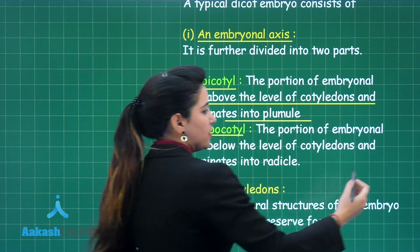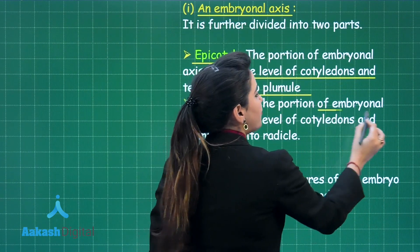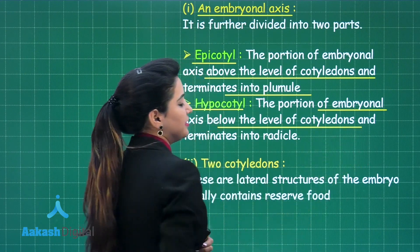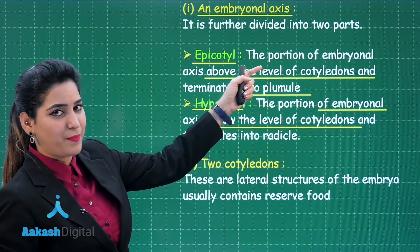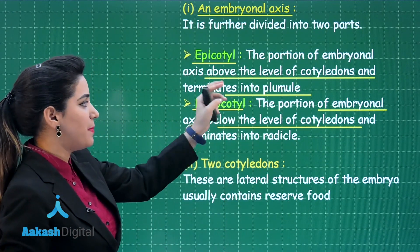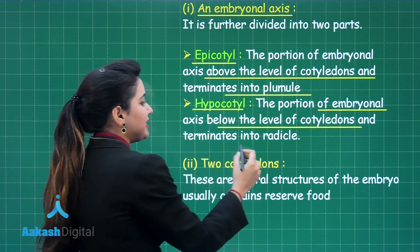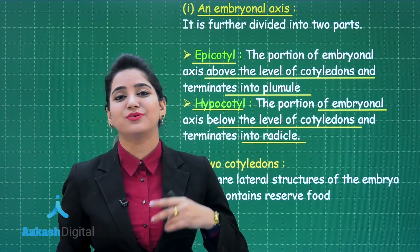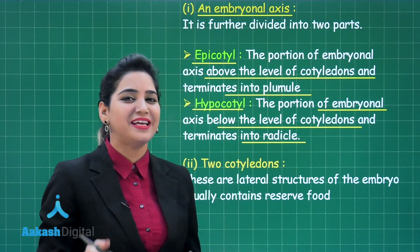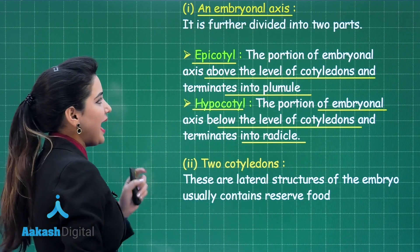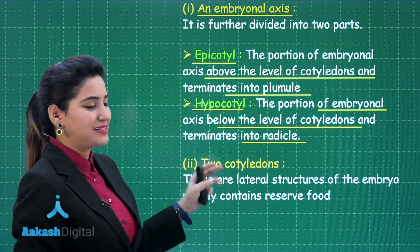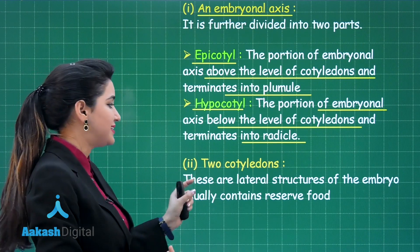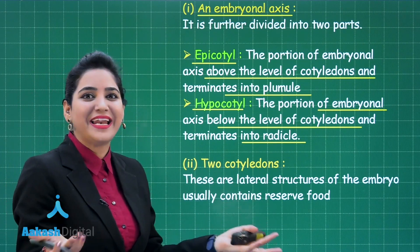Hypocotyl is the portion of the embryonal axis which is below the level of cotyledons — unlike epicotyl which is above. It terminates into the radicle. Hypocotyl gives rise to the radicle and the radicle gives rise to roots. Apart from the embryonal axis, the other significant part of the dicot embryo is the two cotyledons, hence the name dicot.